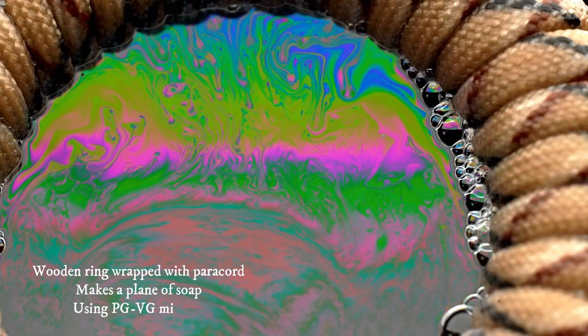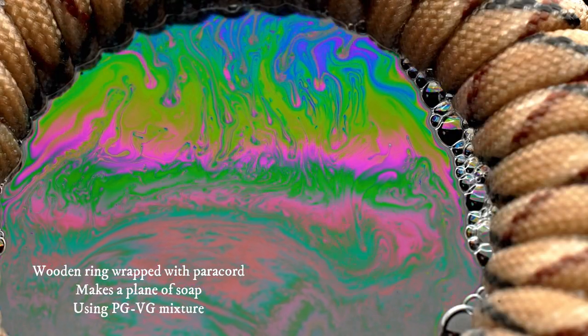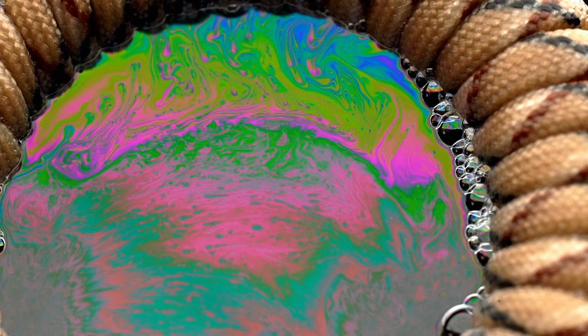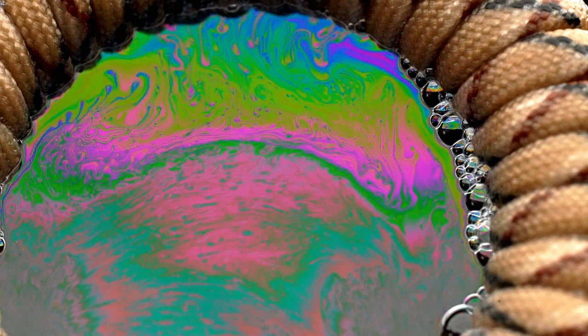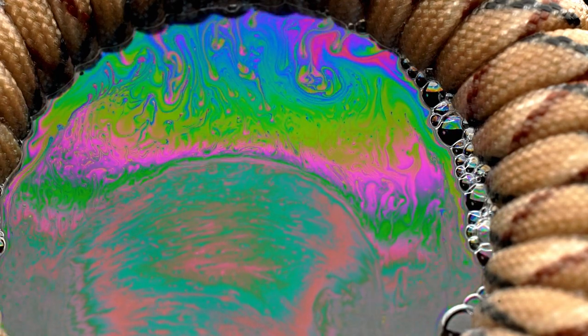It was hard taking macro shots of a spherical surface. And so I moved to a technique you see on YouTube where I used a wooden ring, and then I wrapped paracord around it. And then you soak the whole thing in the soap bubble mixture. Now you're taking a picture of a plane instead of a sphere, and this works pretty well.